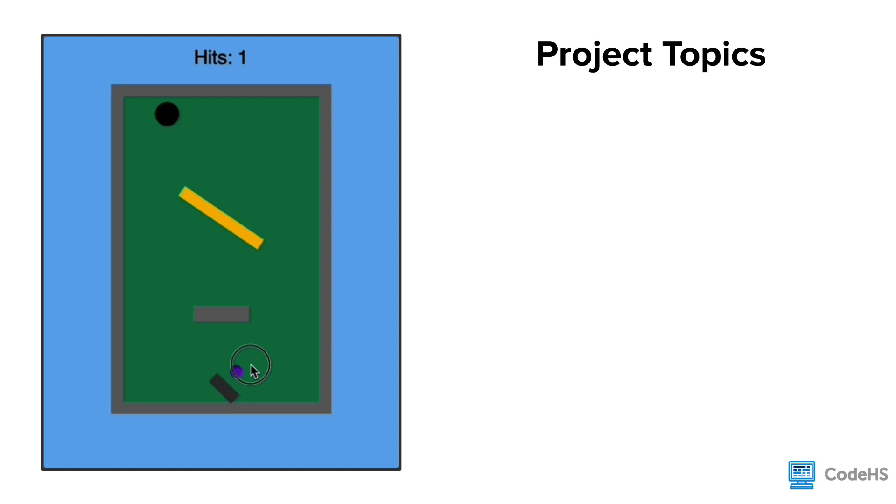You're going to apply your knowledge of sprites and sprite properties in order to create a mini golf hole with walls, obstacles, a ball, a putter, and a hole.